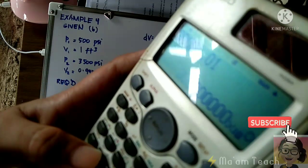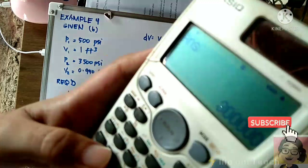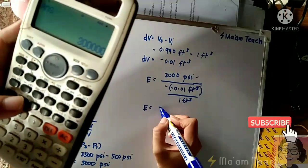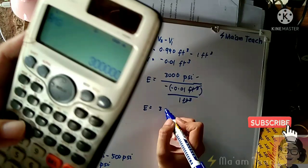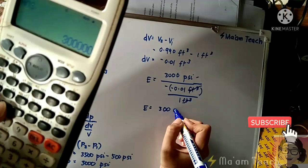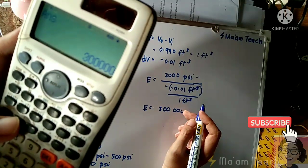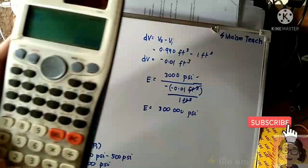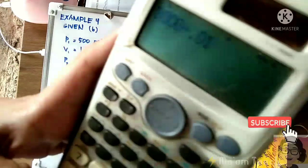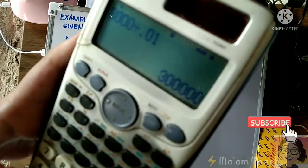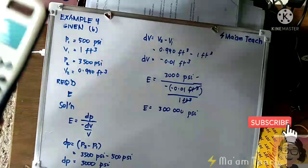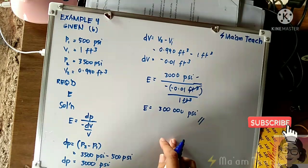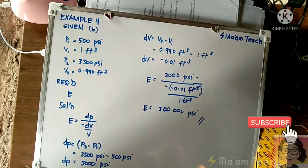So that is - how much is that? Three with five zeros: 1, 2, 3, 4, 5. And what will be the unit? The unit will be psi. So again, 3,000 divided by 0.01 - let us double check - 3 with 5 zeros. Okay, so that's it, that's the answer for our bulk modulus for Example 4b.